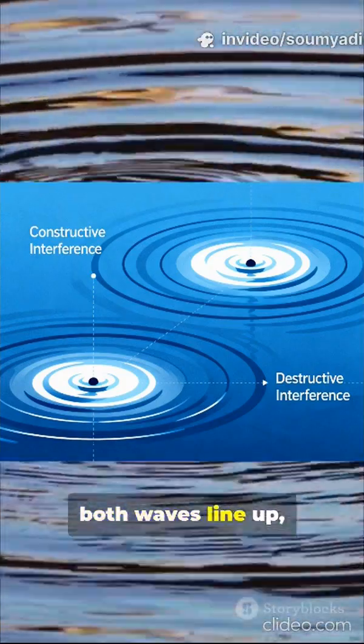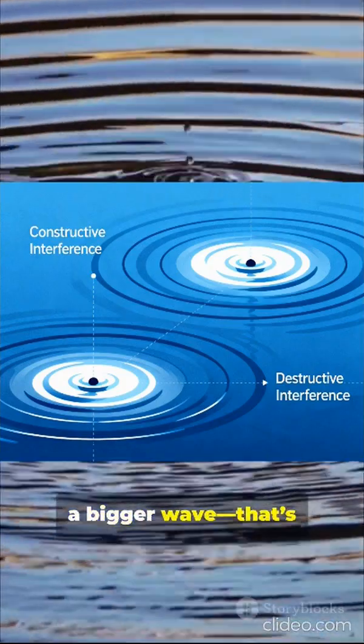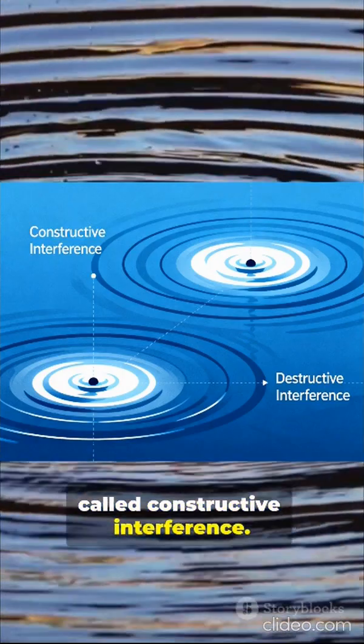If the crests of both waves line up, they add up to make a bigger wave. That's called constructive interference, so the waves are stronger there because they're teaming up.